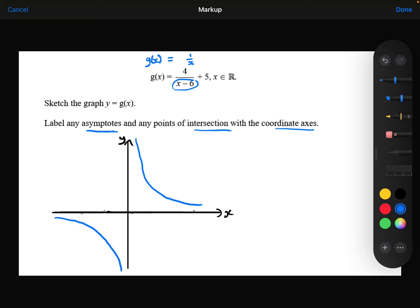This x minus 6 on the inside there, though. What that's going to do is translate my graph and the asymptote 6 squares in the positive x direction.